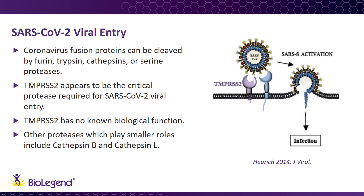Once a virus recognizes its host cell, it needs to enter the host cell in order to be replicated. The S proteins on the surface of SARS-CoV-2 are class 1 viral fusion proteins, meaning they require protease cleavage for activation and fusion to the host membrane and virus entry. Coronaviruses can use various host proteases to facilitate this cleavage, including furin, trypsin, cathepsins, or serine proteases, among others.